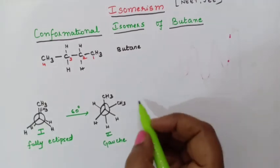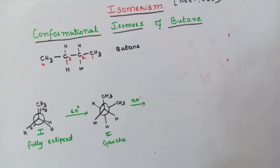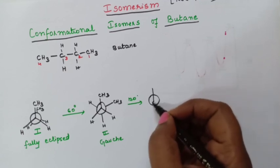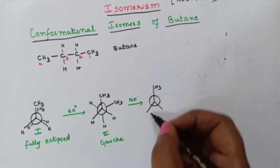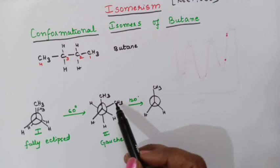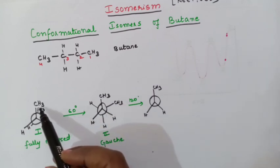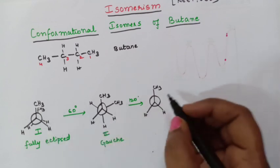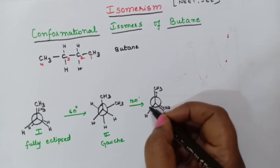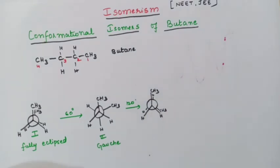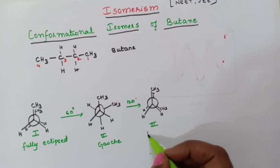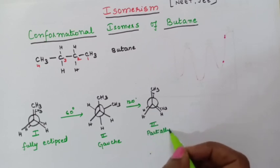Now again rotate the behind carbon to 120 degrees. The front we write as it is: CH3, H, and H. The behind carbon when rotated to 120 degrees gives CH3 here, with hydrogen and hydrogen. This is called the partially eclipsed structure — structure 3, partially eclipsed. If methyl and hydrogen groups are close to each other, we call it partially eclipsed.